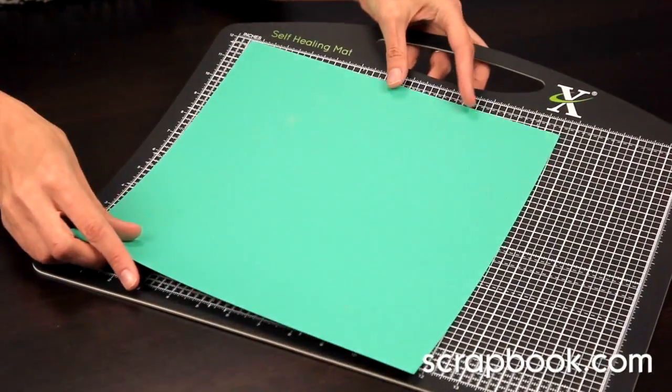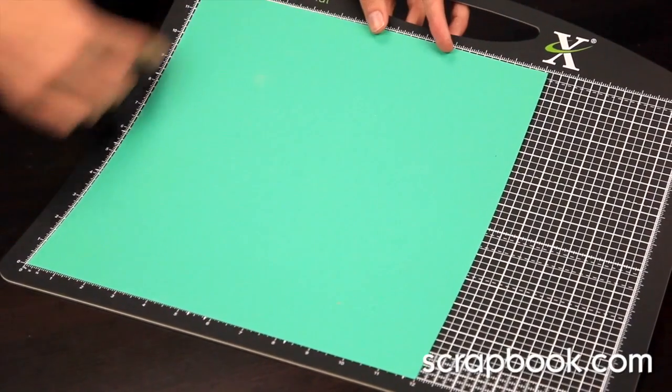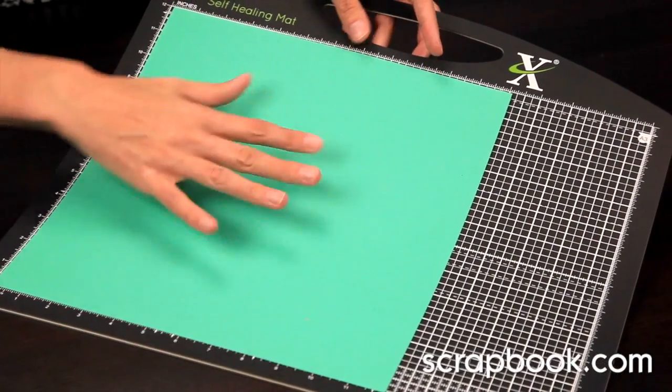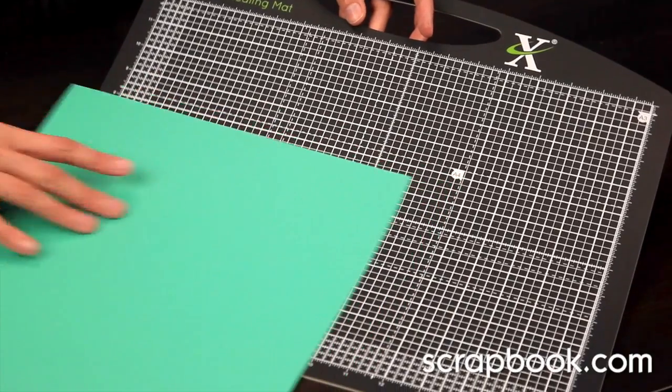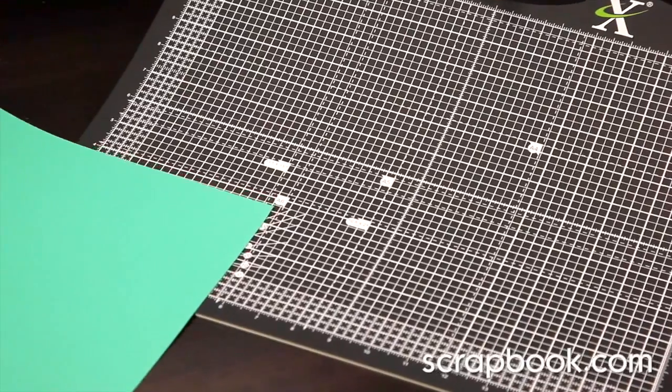You can lay your 12x12 or larger paper down and you can still see the lines where you would need to cut. So you can slide accordingly for A4, A5, A6, and so on.